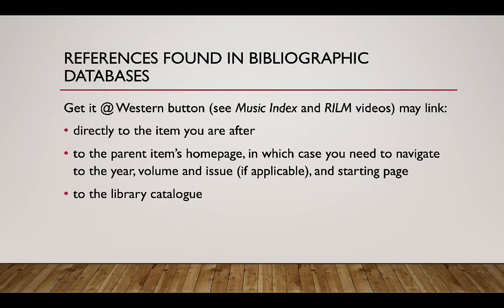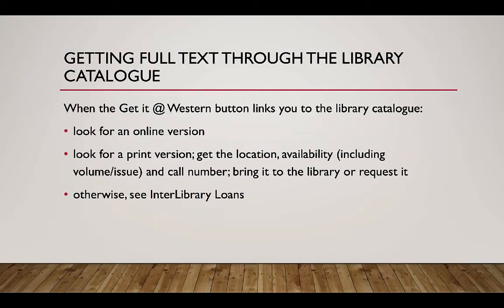Or the Get It At Western button may link you to the library catalog. When it does, look for an online version. If there is no online version, look for a print version. Get the location, availability including available volumes and issues, and call number. Bring this information to the library or request the item through the library catalog.